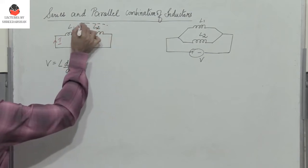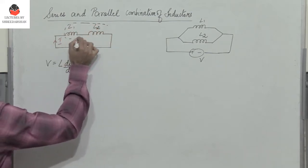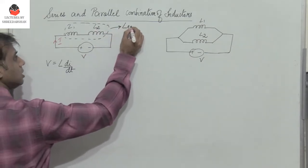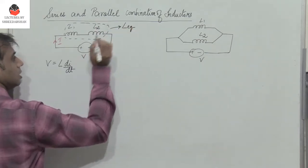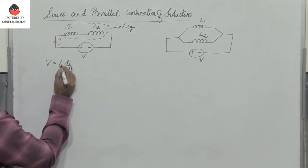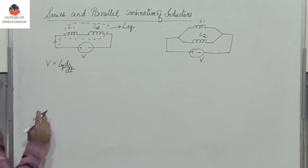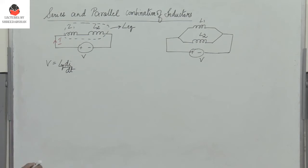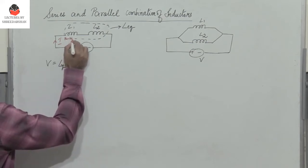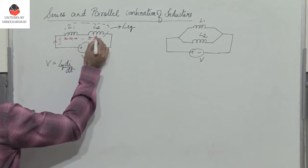Now let us assume that these two inductors are replaced by an equivalent inductance L equivalent, so therefore V equals L equivalent times dI/dt. Let the voltage drop across the first inductor L1 be V1 and the voltage drop across L2 be V2.